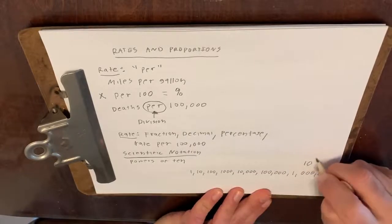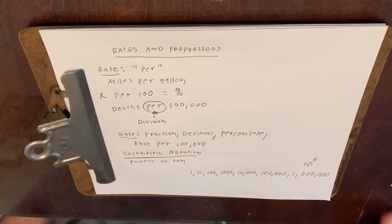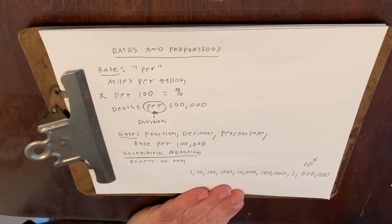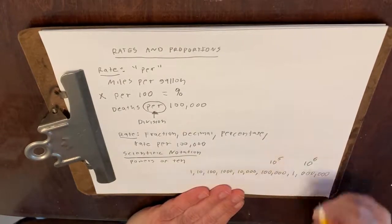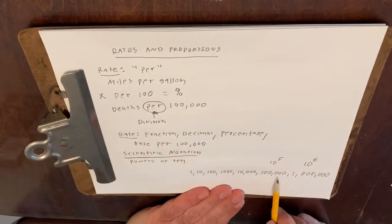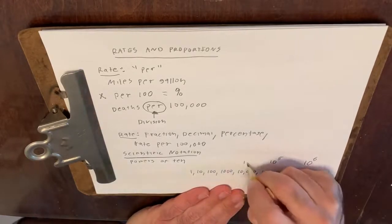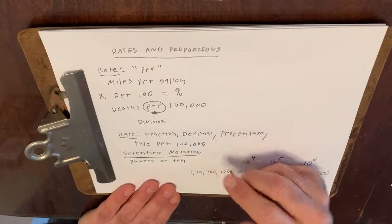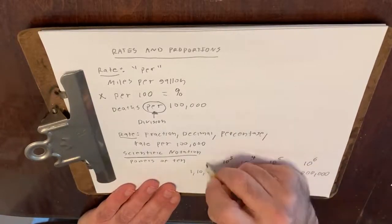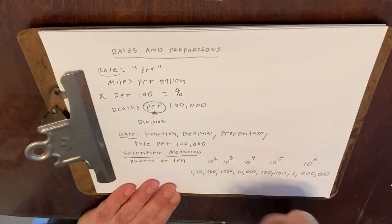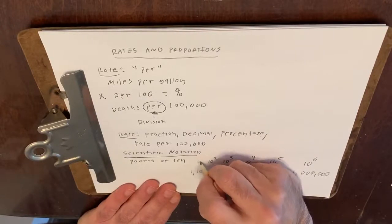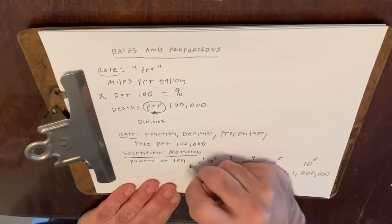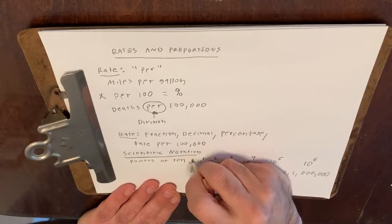A million is 10 raised to the sixth power — that's a one with six zeros. A hundred thousand is 10 to the fifth power — a one with five zeros. Ten thousand is 10 to the fourth power — a one with four zeros. One thousand is 10 to the third. One hundred is 10 to the second. Ten is 10 to the one. And one is 10 to the zero.